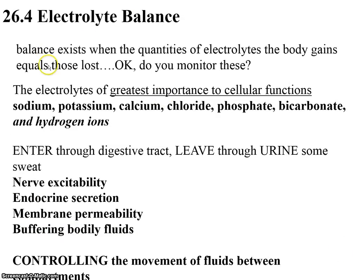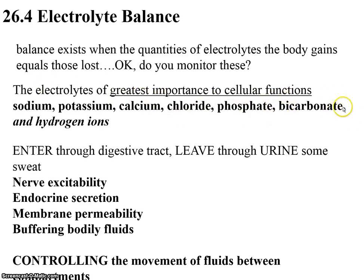Now, electrolyte balance. We're looking at these separately, though we know there's some interdependence. Balance exists when the quantity of electrolytes the body gains equals those lost. The ones of greatest importance are sodium, potassium, and calcium — and chloride follows sodium. These three we've seen through many chapters and know why they're important. Phosphates go with calcium by association. Bicarbonates we've looked at in the respiratory system and will continue to look at here, because this is a very important buffer in our blood.